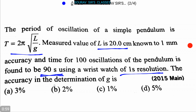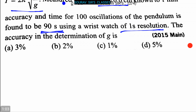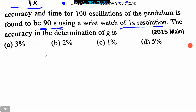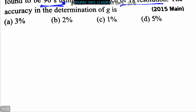The accuracy in the determination of g is — option A: three percent, option B: two percent, option C: one percent, and option D: five percent. Now let's proceed to the solution. We know the time period T equals small t divided by n.